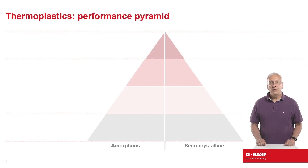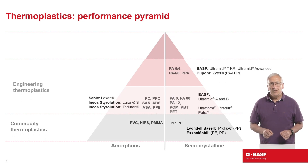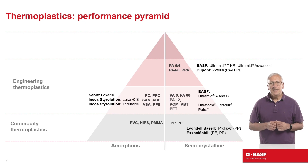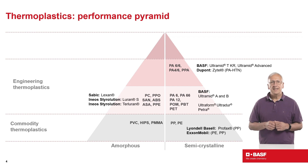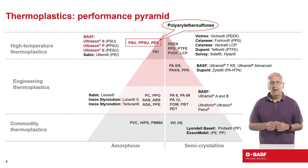Let's start the Ultrason overview by showing the thermoplastic performance pyramid, with amorphous materials shown on the left and semi-crystalline materials on the right. Commodity polymers such as polyethylene, polypropylene, and PVC are shown at the bottom of the pyramid. Engineering plastics such as PBT, PET, polycarbonate, ABS, and nylons appear in the center section. And high temperature plastics are in the top section, at the pinnacle of the pyramid.